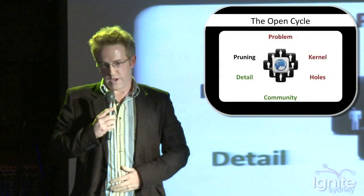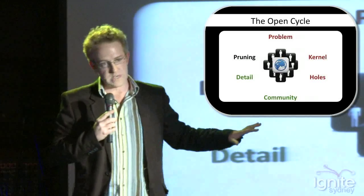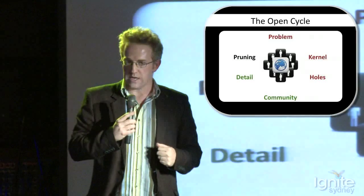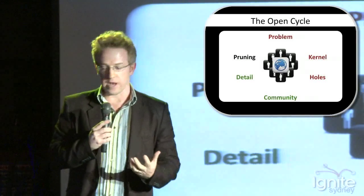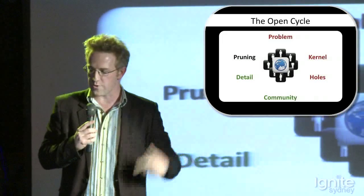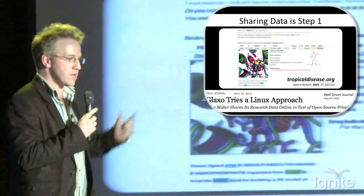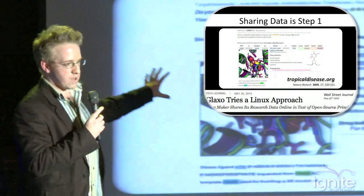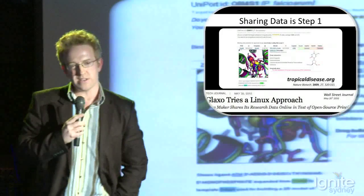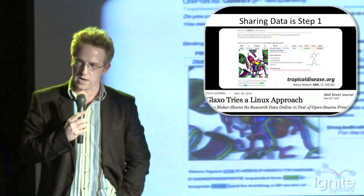There are some things about this which are tricky. This is the basic cycle: you post a problem on the web, you post kernel data, people reveal holes in your approach, and you ask the community for input. The community provides detail about how you might improve it, and then someone in charge prunes it. This is the open cycle — pretty clear and obvious. To do this, you have to post data — kernel data. We did this, and Glaxo recently did this with malaria data. But posting data is just step one. You want to collaborate on the web and work with people, not just post data.